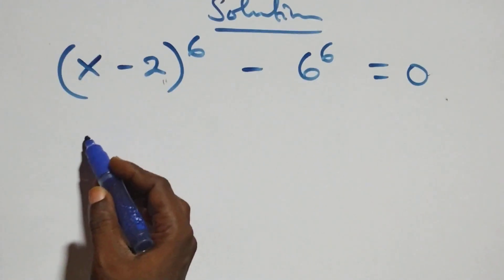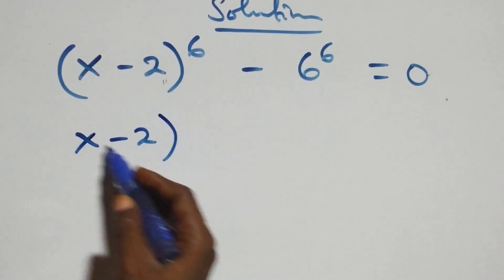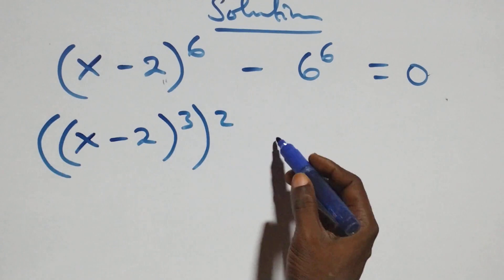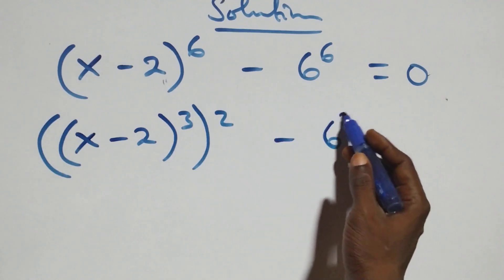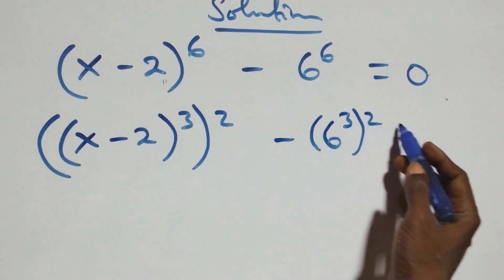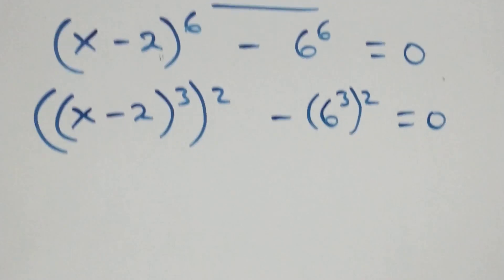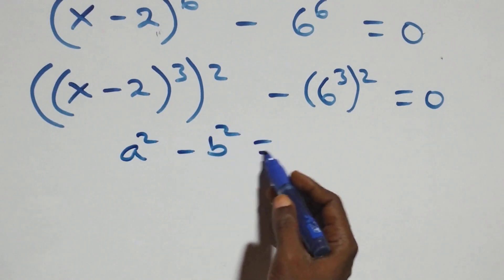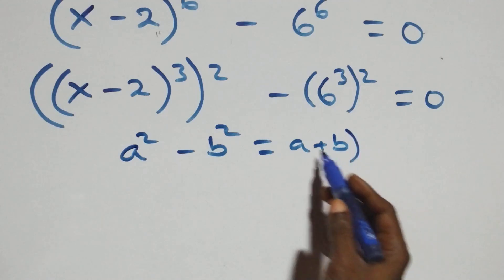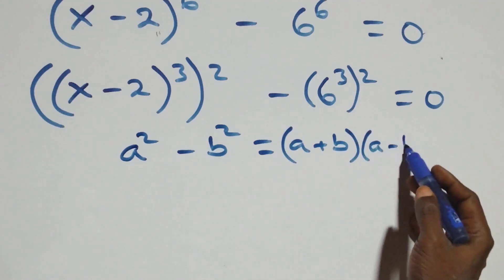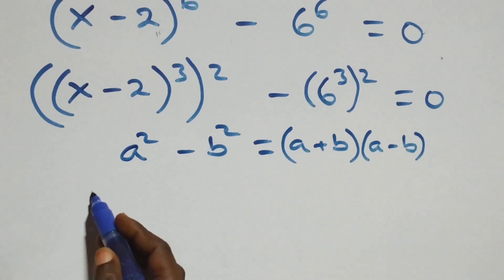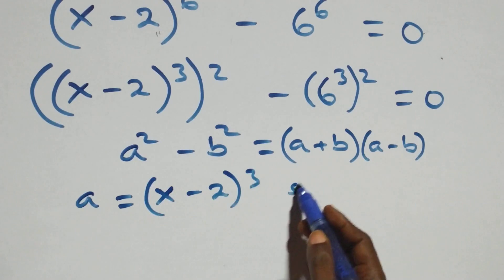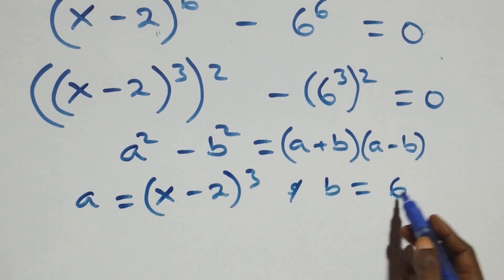The next step: we can write it as x minus 2 raised to power 3, squared, minus 6 raised to power 3, squared, equals to 0. This follows from a squared minus b squared, which is the same as a plus b in brackets times a minus b in brackets, where a stands for x minus 2 raised to power 3, and b stands for 6 raised to power 3.